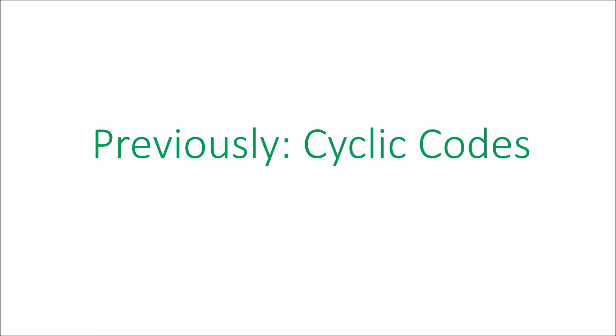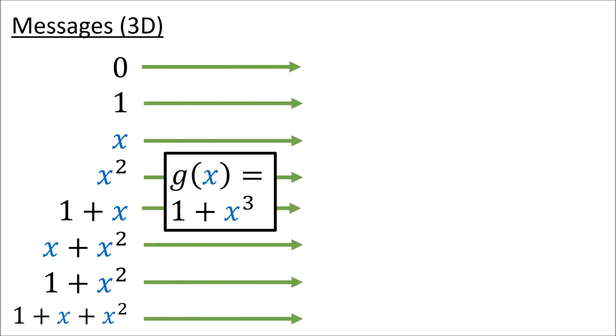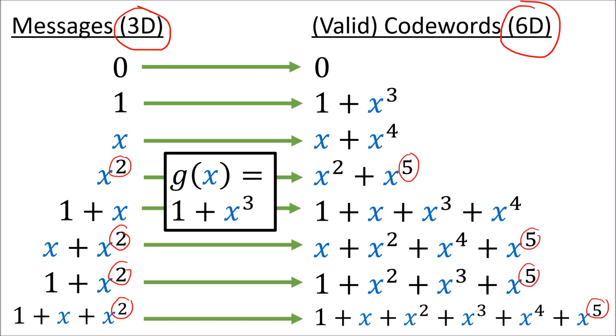In the last few videos we learned about cyclic codes, which involve taking message polynomials and multiplying them by a special generator polynomial g of x to get valid codeword polynomials. In this example, the message polynomials live in a three-dimensional space since they have a maximum degree of 2. And after multiplication by the generator, the codeword polynomials live in a six-dimensional space since their maximum degree is 5.